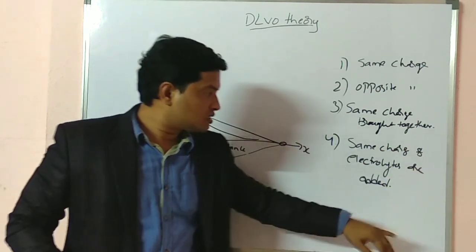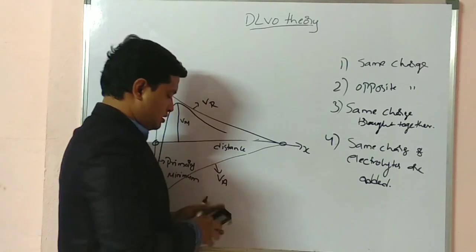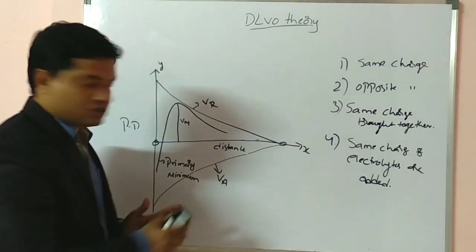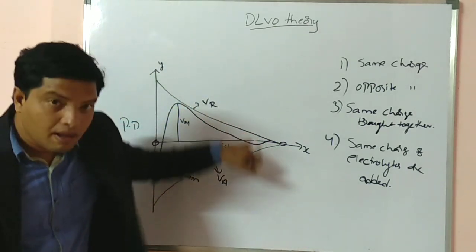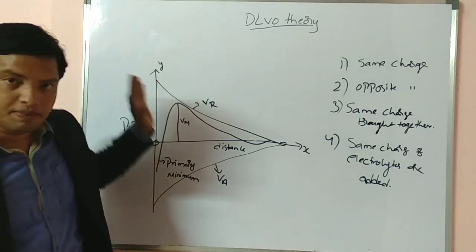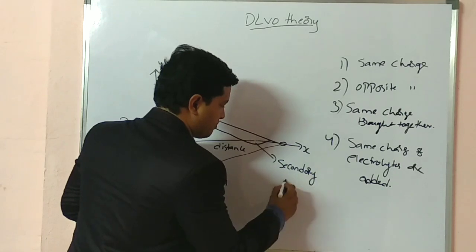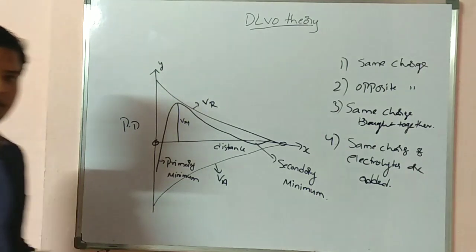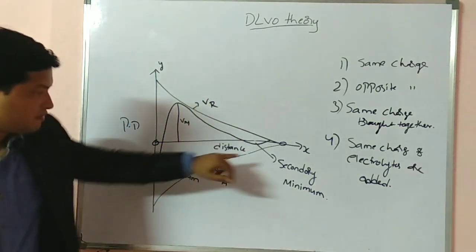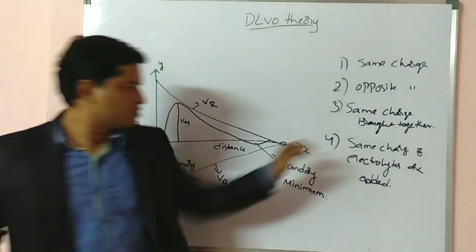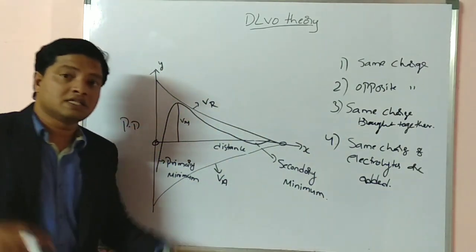The fourth point says particles are having same charge and electrolytes have been added to the system. When electrolytes are added in a controlled fashion — we call this controlled flocculation — we will see what happens. The particles are at a distance of 1000 to 2000 Angstroms, and at this distance, the particles exhibit attractive forces. The graph goes below, which represents attraction. This region we call secondary minimum.